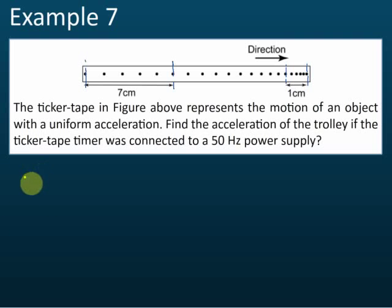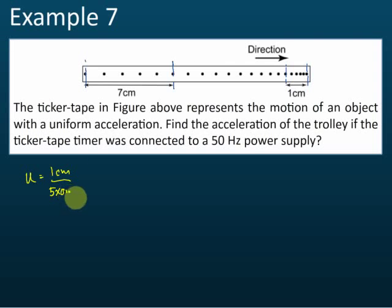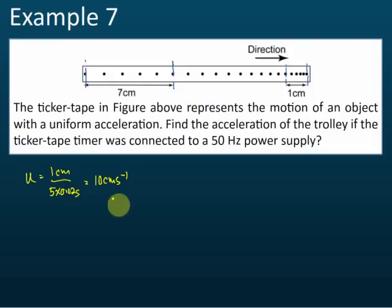First, let's find the initial velocity. Initial velocity u equals the distance travelled, which is 1 cm, divided by the time taken — one, two, three, four, five — five ticks, so divided by five ticks times 0.02 seconds. This is equal to 10 cm per second.